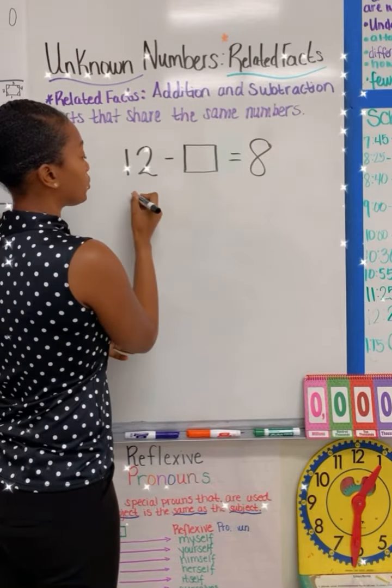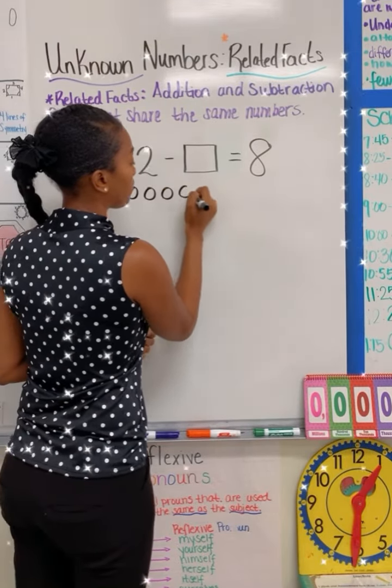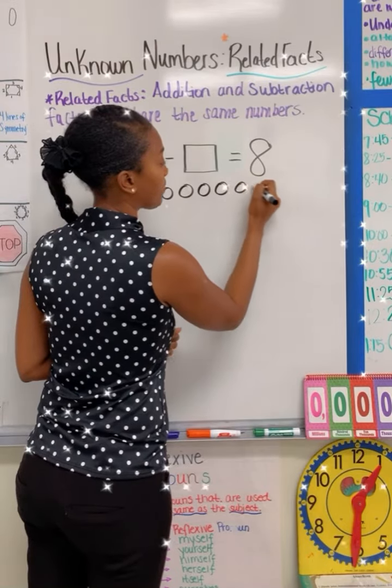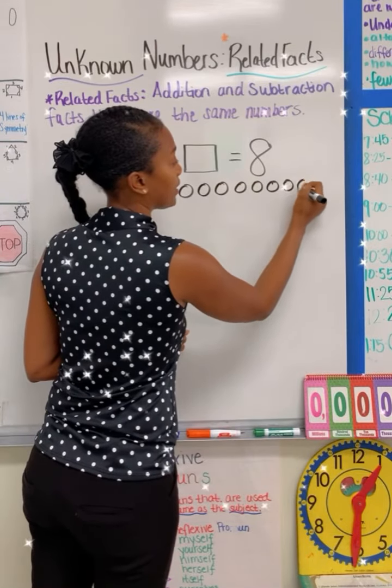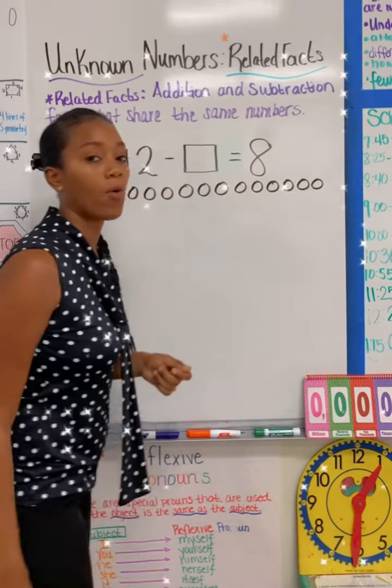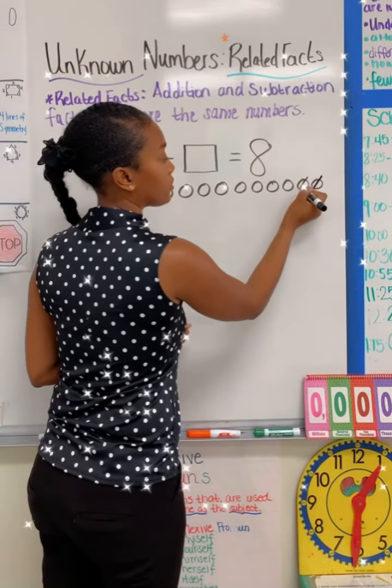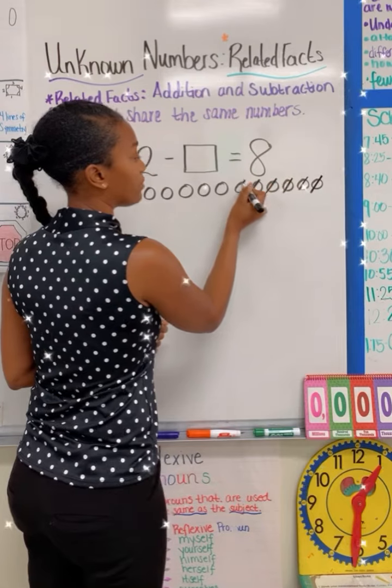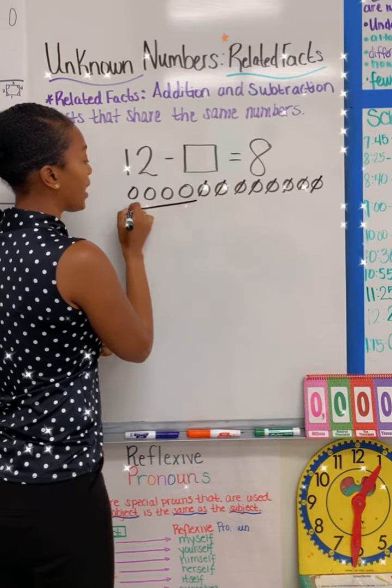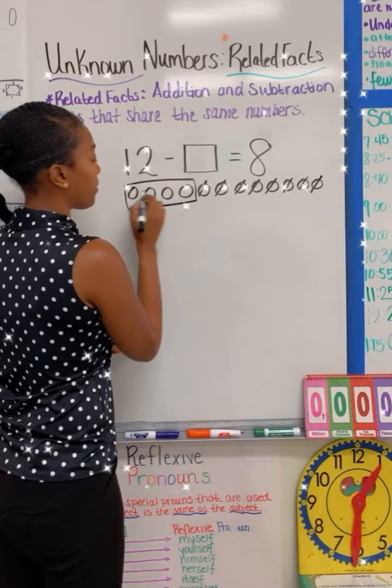I'm going to use 12 counters. One, two, three, four, five, six, seven, eight, nine, 10, 11, 12. I'm going to then cross out eight of them. One, two, three, four, five, six, seven, eight. I am left with four remaining.